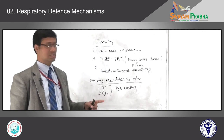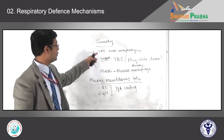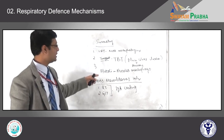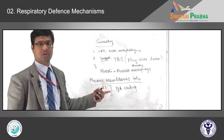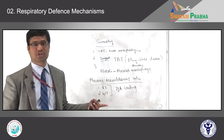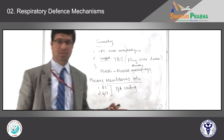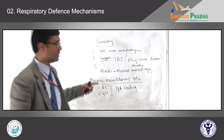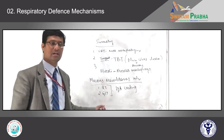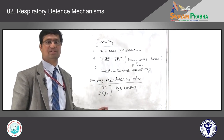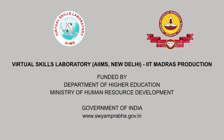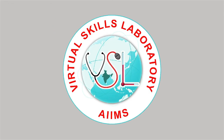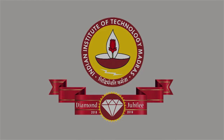We will stop today's class here. When you have impairment in these mechanisms, you will get pneumonia — inflammation of the lung parenchyma — which I will be talking about in the Respiratory System Part 3 class.